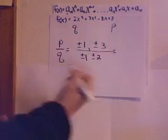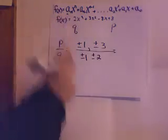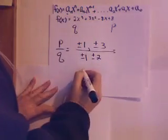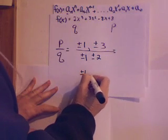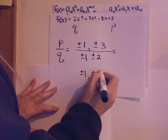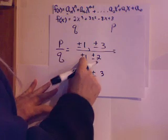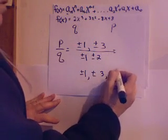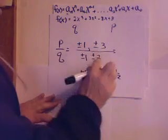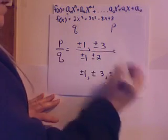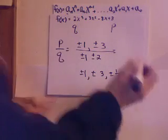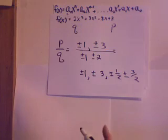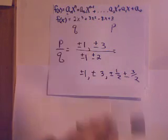So that gives me all of the possible answers to this polynomial. If I make a list of them: plus or minus 1, plus or minus 3, plus or minus 1 half, plus or minus 3 halves. So I have 1, 2, 3, 4 times 2. I have 8 possible answers for this polynomial.